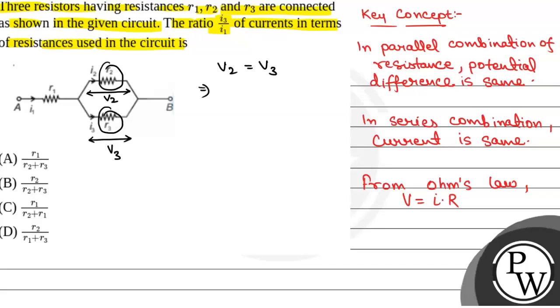Now, V2 will be equal to I2 into R2. And V3 will be equal to I3 into R3. So we will have I2 is equal to R3 by R2 into I3. This will be I2.